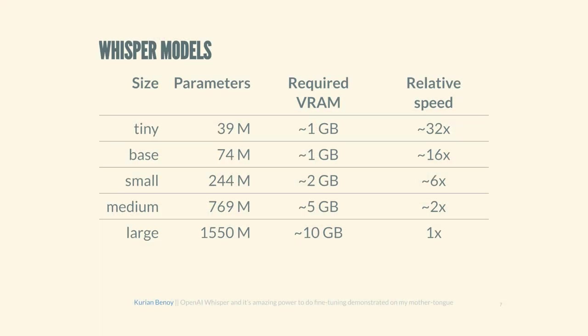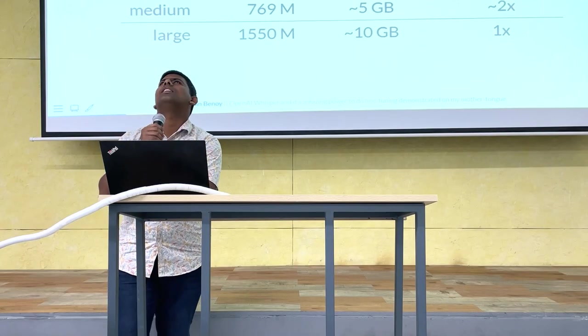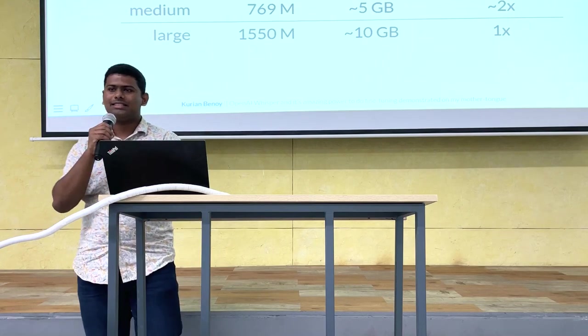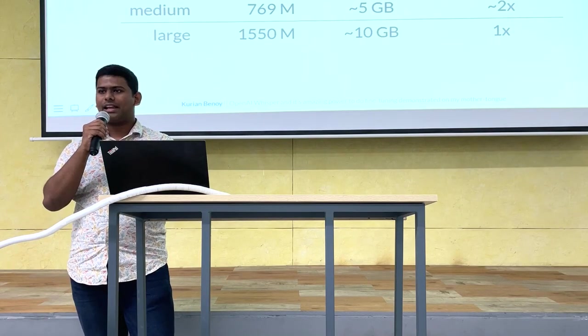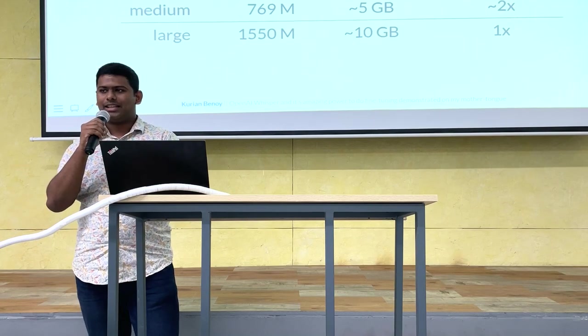OpenAI released five model sizes: tiny, small, medium, and large. After the paper was released, two or three months later they also released the Large v2 model, which was trained for roughly 3x more time.